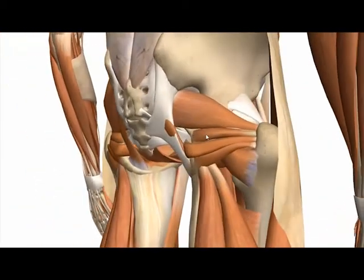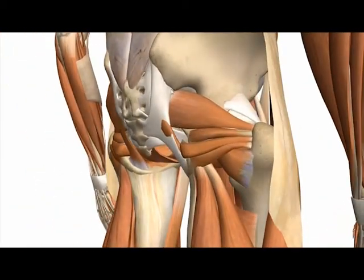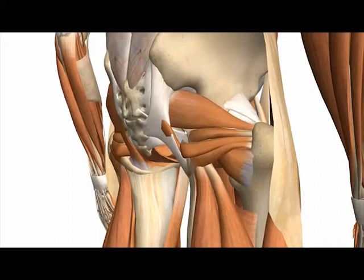The piriformis runs through the greater sciatic foramen, and there are two gaps above and below the piriformis. Above the piriformis, you have some vessels and nerves that pass through, and below the piriformis, you also have vessels and nerves that pass through. Importantly, below the piriformis you get the sciatic nerve, and above, you get the superior gluteal nerve and vessels.